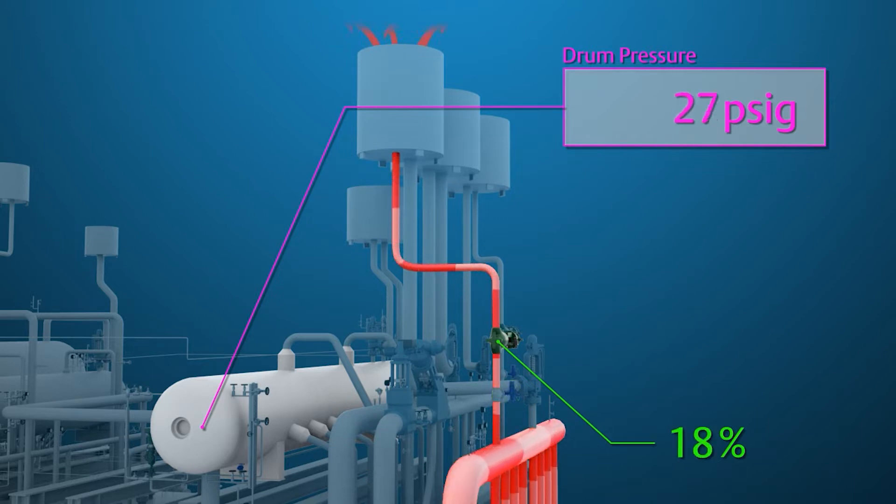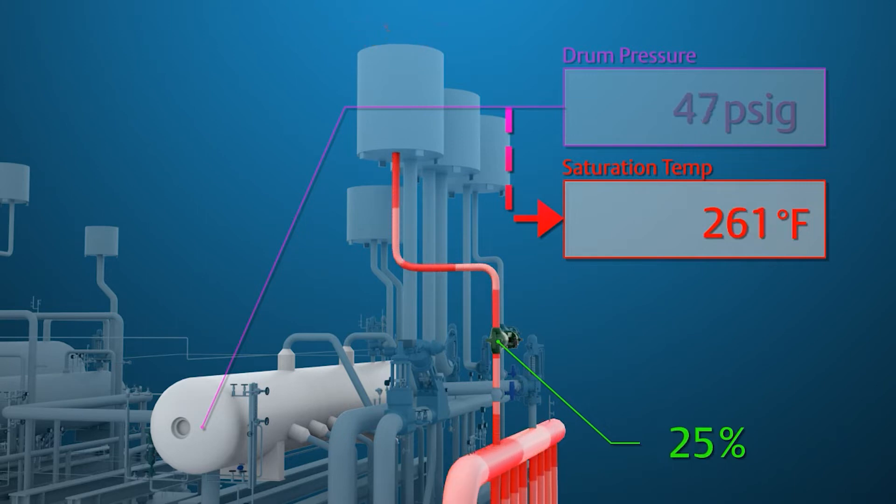The control system logic will calculate the saturation temperature of the steam drum based on the sensed pressure. This is the temperature that is used to control the sky vent valve.